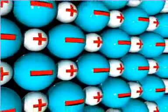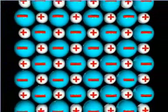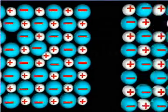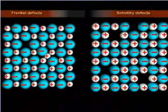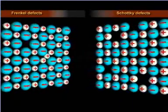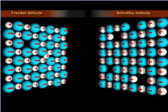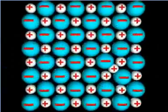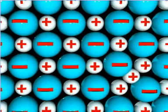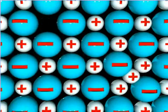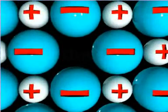On the other hand, in case of ionic solids, the stoichiometric defects exist as Frenkel defects and Schottky defects. In both the Frenkel and Schottky defects, the electrical neutrality of the substance remains maintained. Frenkel defects arise in the ionic crystals having large difference in the size of the constituent ions. In such defects, the smaller ion dislocates from its lattice site to an interstitial site.